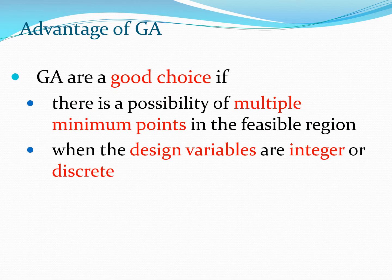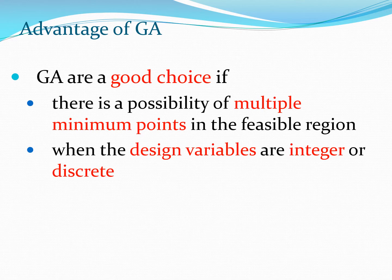When to use GA? This is often asked of research students: why have you used GA instead of a gradient-based method? One thing you should show is that there is a possibility of multiple minimum points in the feasible region — this is a strong case for stochastic optimization. Also, if your design variables are discrete or integer in nature, then you do not want to deal with gradients, and GA is useful. If neither case applies to your problem, you may have difficulty justifying the choice of GA given its computational expense.